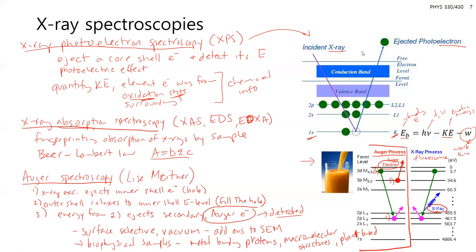Student question: In terms of deciding when to use the Auger process versus x-ray fluorescence — they both have to be in vacuum, and they look so identical, so when would you choose one over the other? Good question. I think Auger gives some more fine details of the outer energy levels and can provide more fine detail of the materials there — that's when you would pick the Auger process. I'll look into that in more detail and add it to the Canvas discussion section.